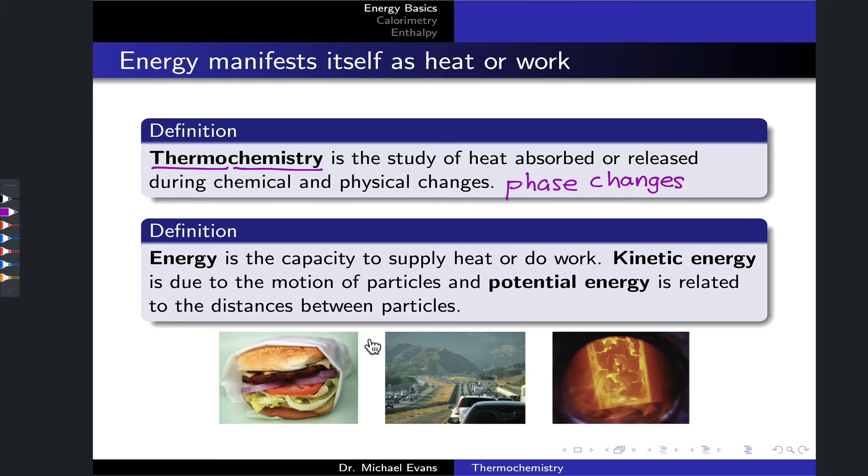In any chemical or physical process, energy is going to be transferred, and energy is the capacity of a system to supply heat or do work. This definition in terms of these two components, heat and work, is important to keep in mind. We're actually going to put this into equation form when we talk about the first law of thermodynamics.